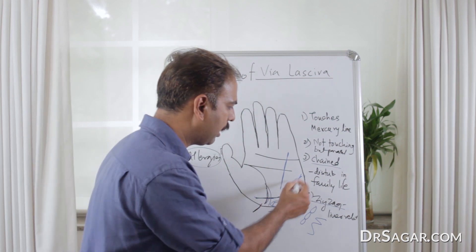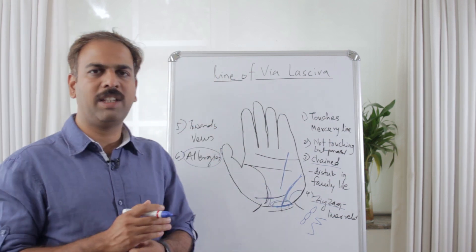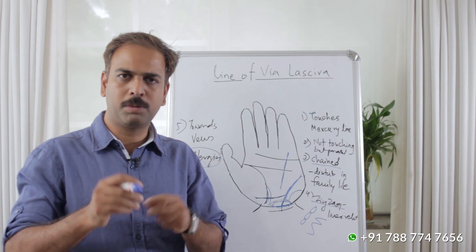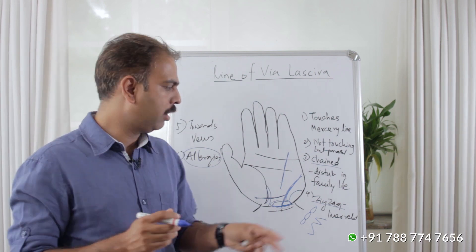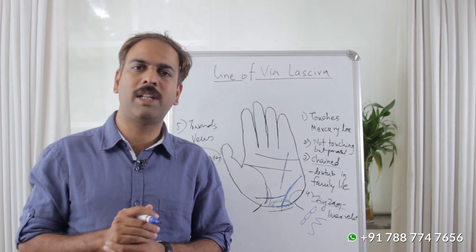Then, if this Via-Lasciva line is chained, and there are many chains, then the family life will be disturbed.